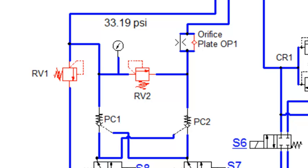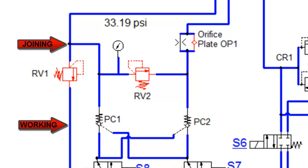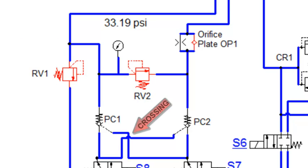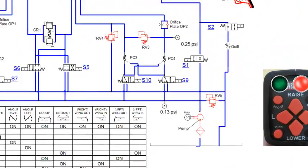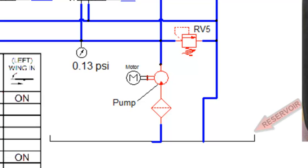The symbol for a working hydraulic line is simply a section of straight line. Joining lines are represented by two straight lines with a connecting dot at their intersection. Crossing lines are represented by one line jumping over the other. A pilot line is represented by a series of dashes. The following symbols represent the reservoir,